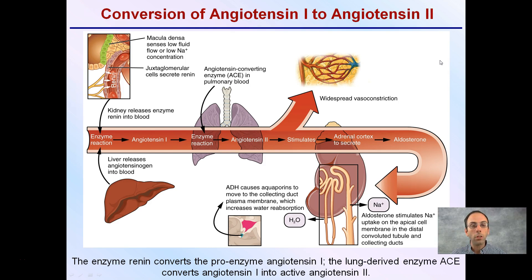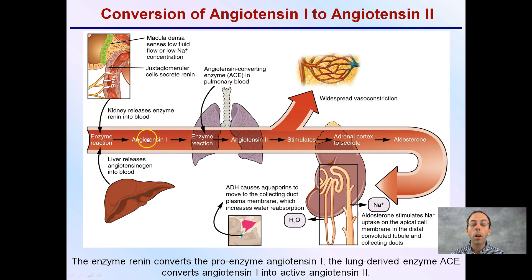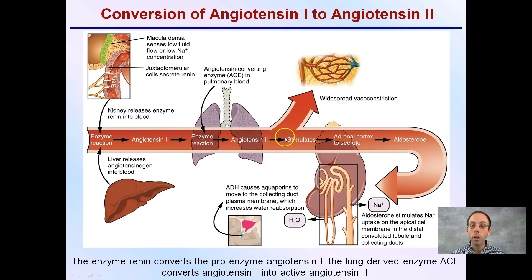Looking at the conversion of angiotensin-1 to angiotensin-2, we have a complex process. The liver releases angiotensinogen into the blood, and the kidneys release the enzyme renin into the blood. This cascades into angiotensin-1 through enzymatic reactions. It's then converted with ACE — the angiotensin-converting enzyme — in the pulmonary blood, producing angiotensin-2, which stimulates widespread vasoconstriction.